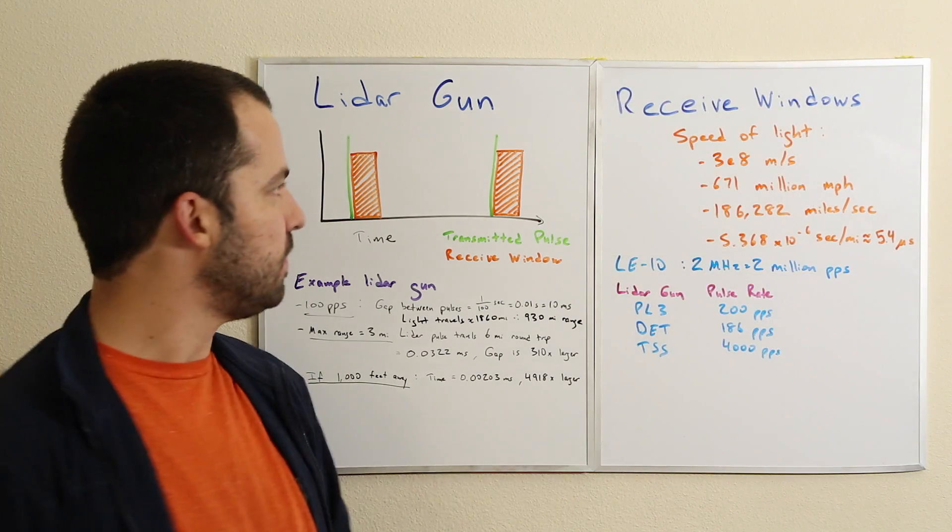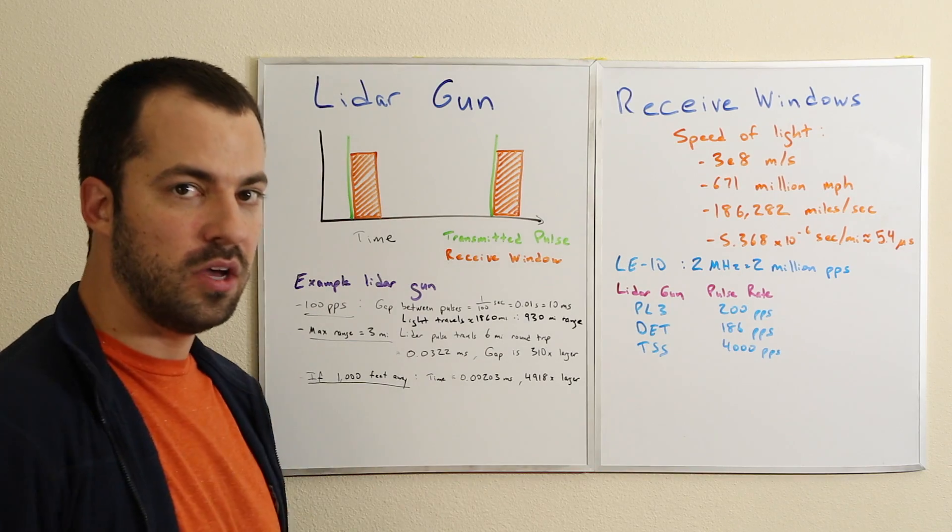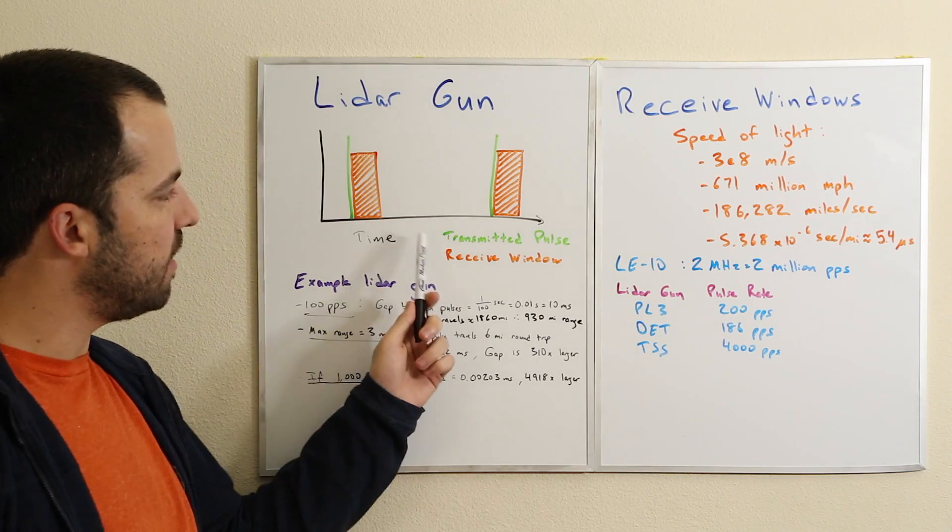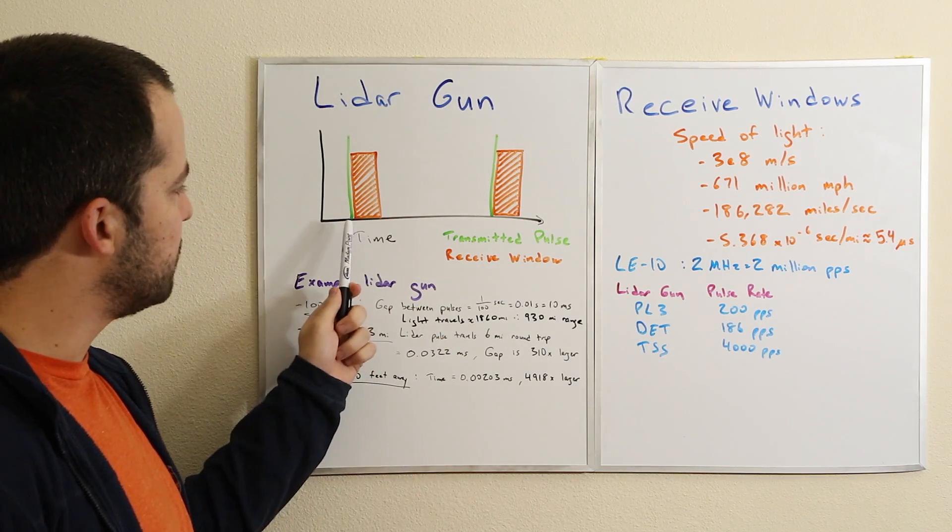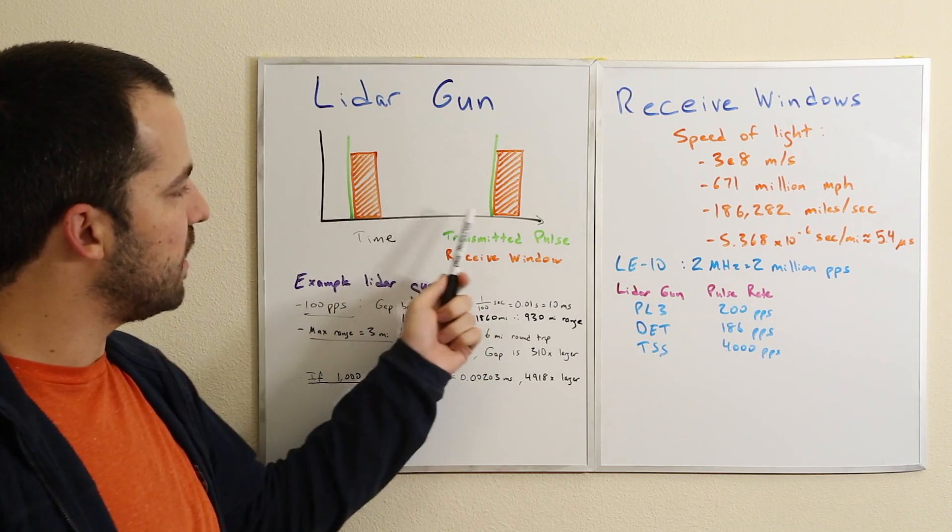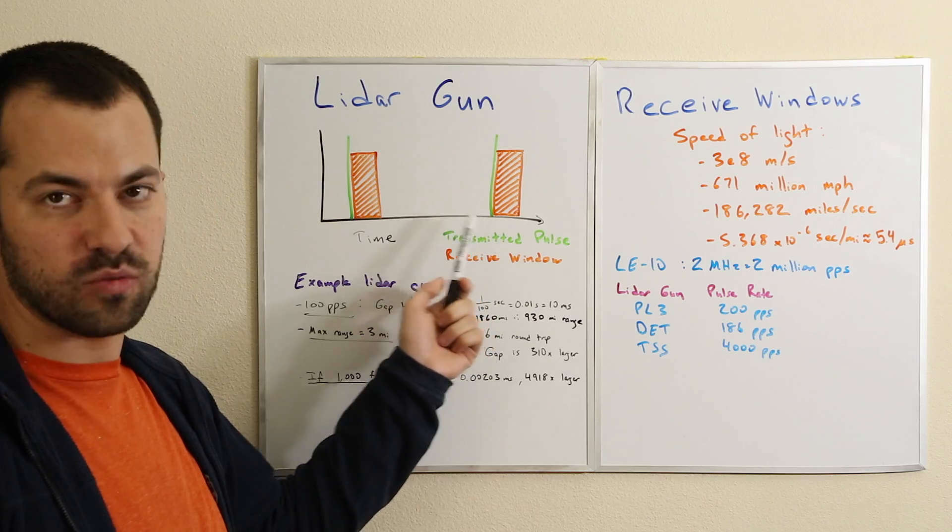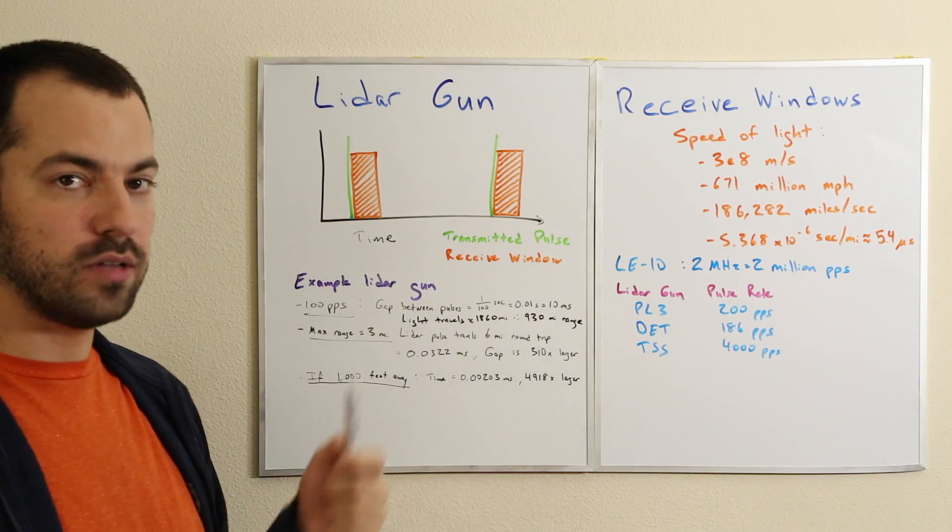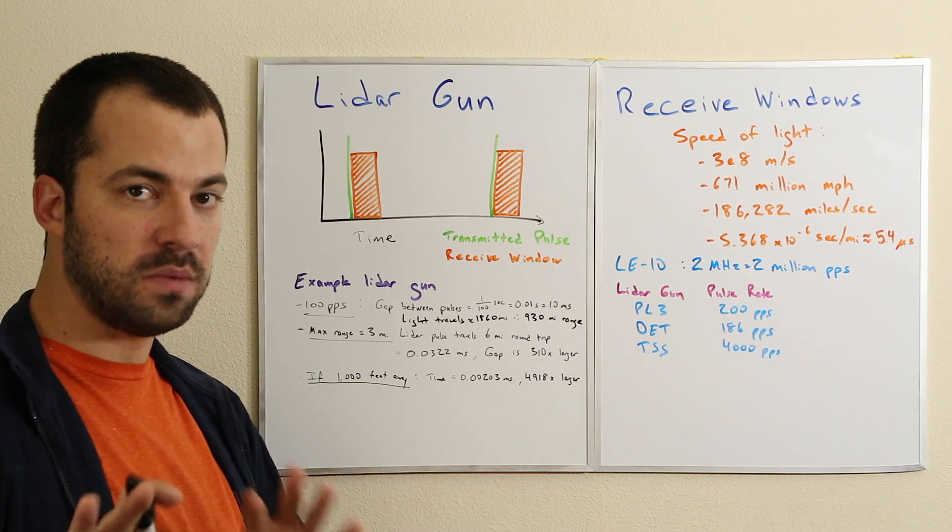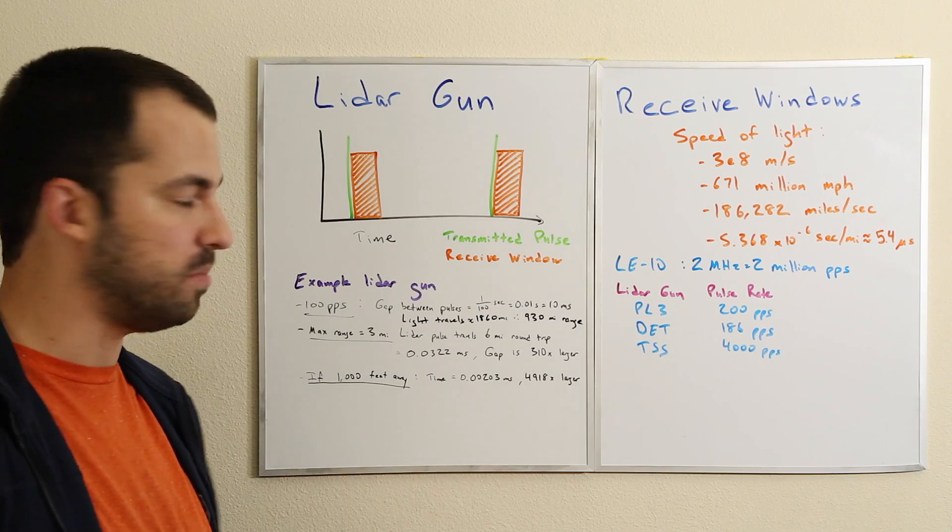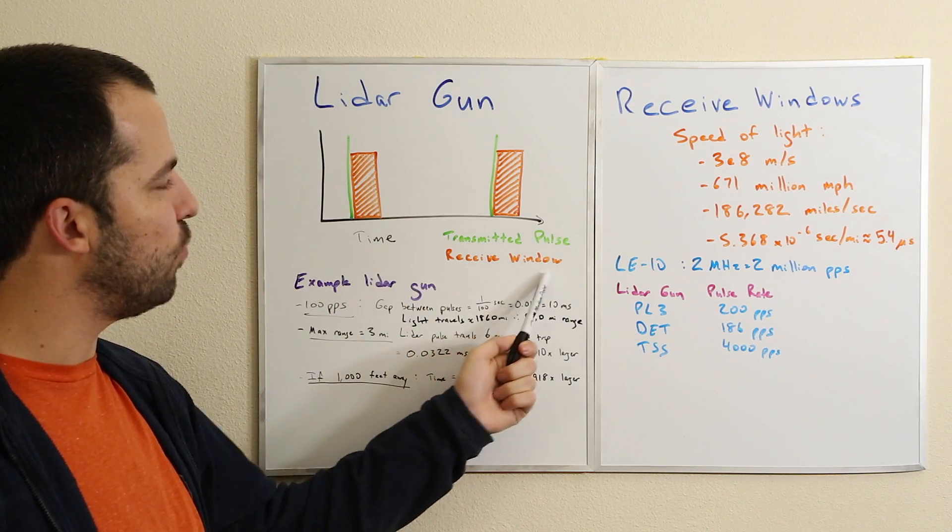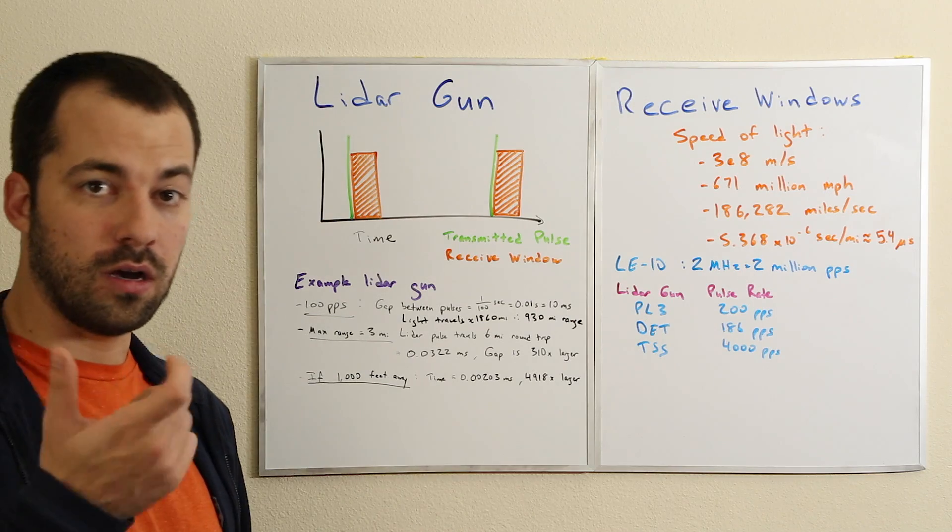The way a lidar gun works is it transmits a pulse and then looks for the reflection. Let's say this green pulse here is the transmitted pulse. We have one here and then another one - in between is the gap between pulses. However, there's only a short window of opportunity for a legitimate pulse to come back. That's going to be this short orange window here. This receive window is the time when it's looking for a return pulse.